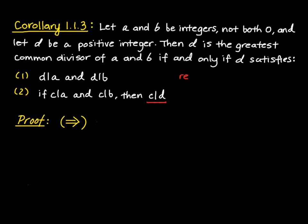Before, if you recall, we had that D was the greatest common divisor of A and B if two things were satisfied. Our definition told us that first, it had to be a common divisor of both A and B, and second, if there was some C that also divided A and B, then that C had to be less than or equal to D.